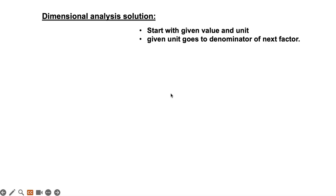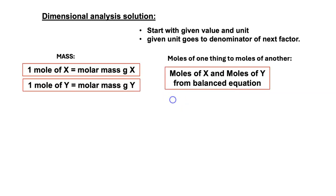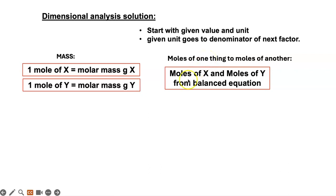Let's recap how to do dimensional analysis. You always start with the given unit and value. The given unit goes to the denominator of the next factor. In today's lesson, we will have two factors containing mass. If we have two substances called x and y, you will say one mole of x is equal to its molar mass in grams, and the same for y. You will also have another factor to convert one thing into another through moles — moles of x equals moles of y from the balanced equation mole ratio.